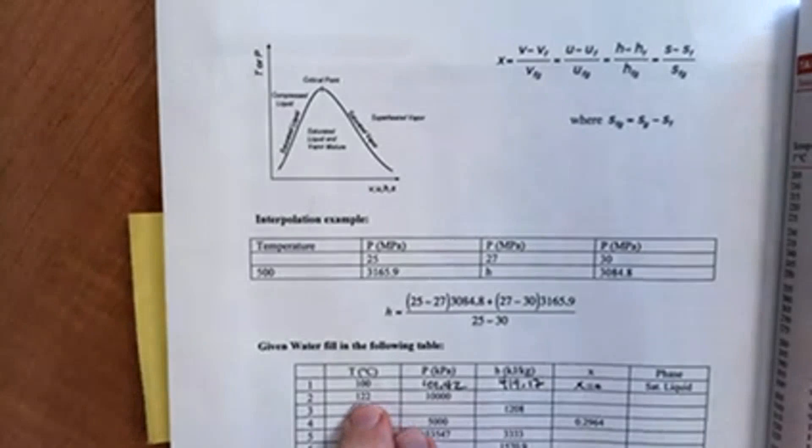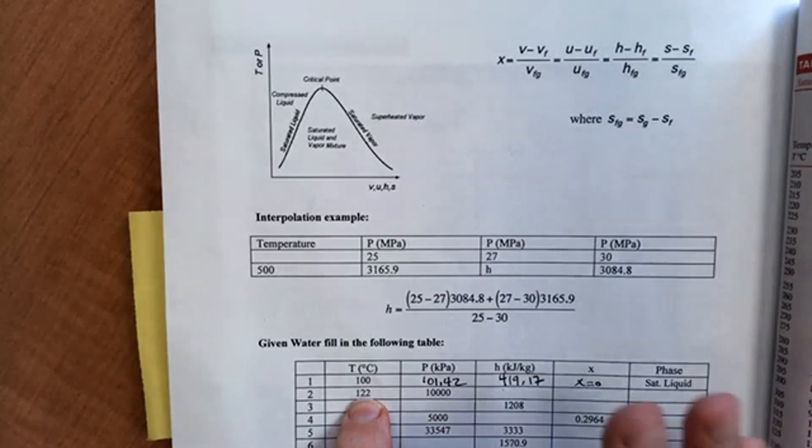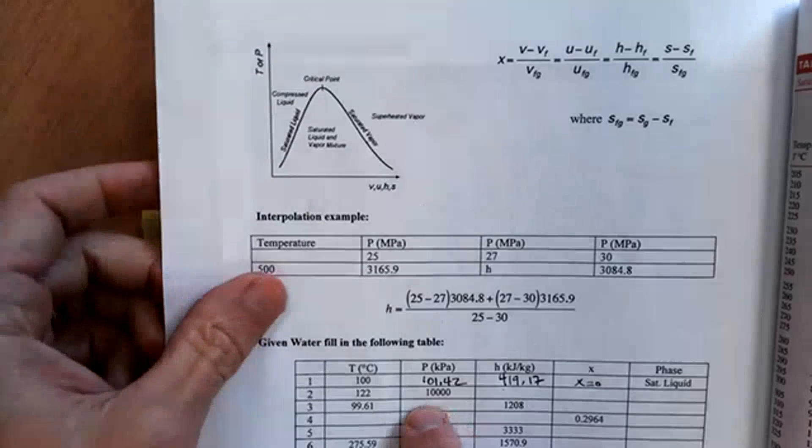All right, let's do the next one. Temperature is given as 122. The pressure is 10,000. So I know two things. I can look up the state.